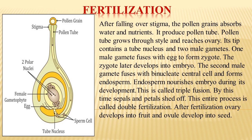Two fusions take place here: one where the male gamete fuses with the egg to form the zygote, and a second where the male gamete fuses with the two polar nuclei forming the endosperm. Because two fusions occur, the process is referred to as double fertilization. The fusion of the second male gamete with the binucleate central cell or two polar nuclei is also known as triple fusion. After fertilization, the sepals and petals shed off, the ovary develops into a fruit, and the ovule develops into a seed.